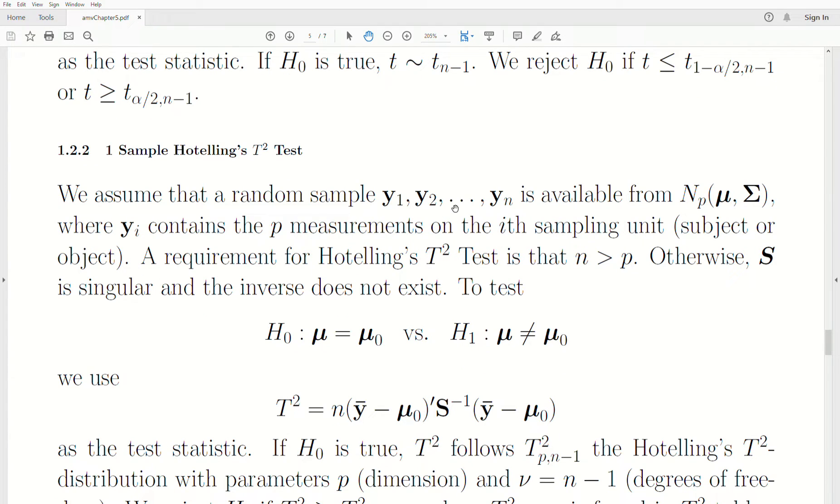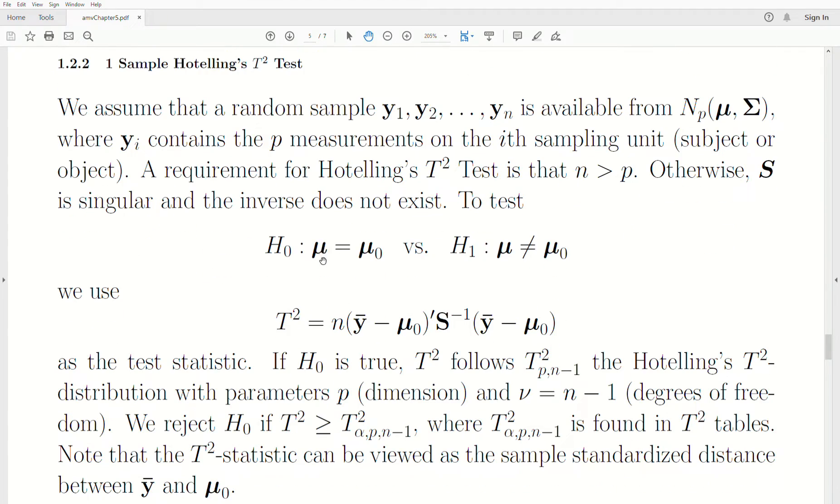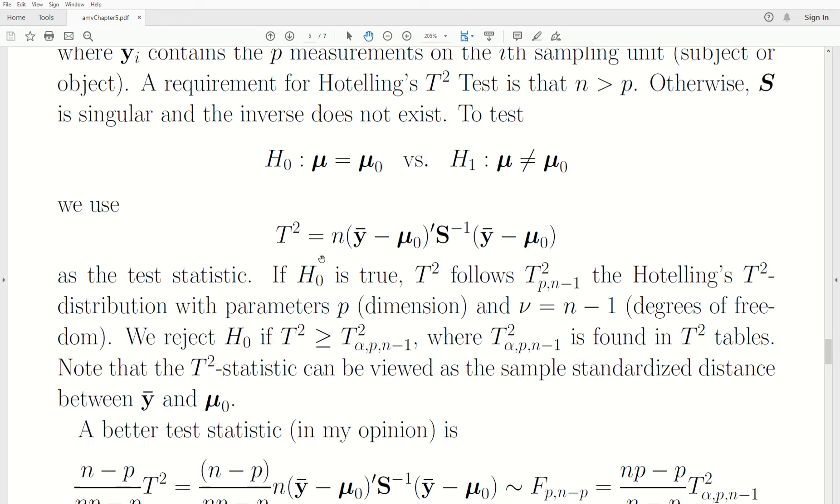One requirement to do this test is that n has to be strictly greater than p. So the numbers of observations has to be more than the number of variables collected on each observation. The reason is s, our sample covariance matrix, is not invertible. It's what's called singular. We want to test the null hypothesis, is our mean vector some value mu naught. Remember, this is a vector versus that it's not. We use T², which is Hotelling's T². It's really the standardized difference between the sample mean and the hypothesized mean. If this is too large, then we reject the null. We say that the sample does not follow this normal distribution.